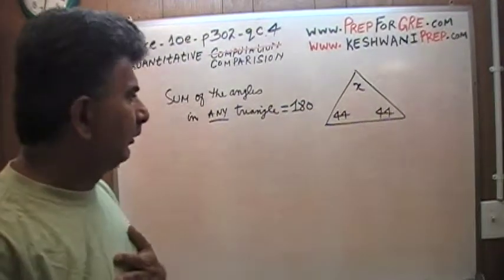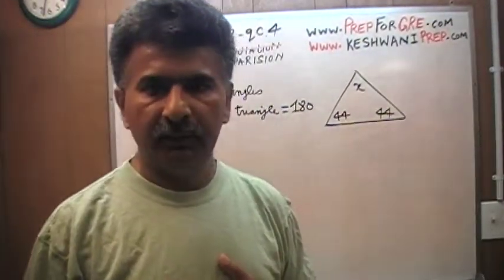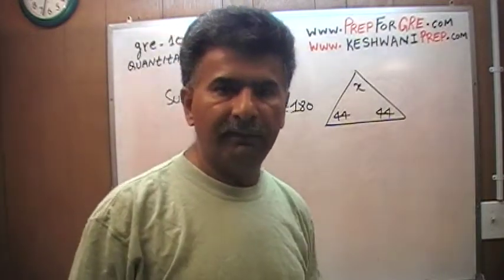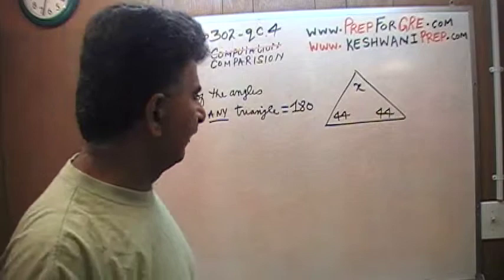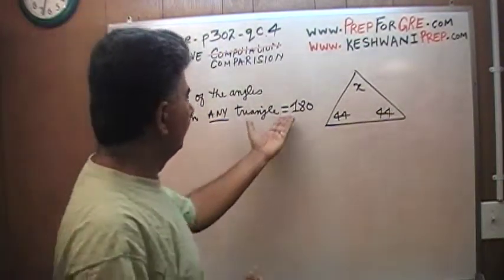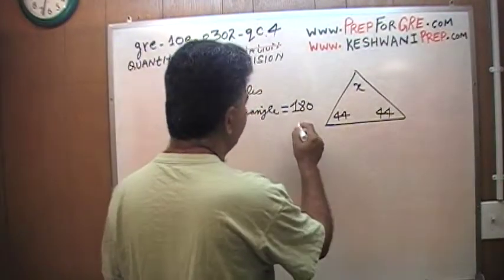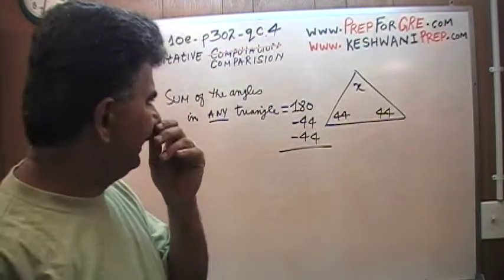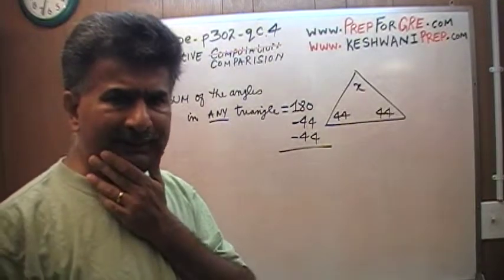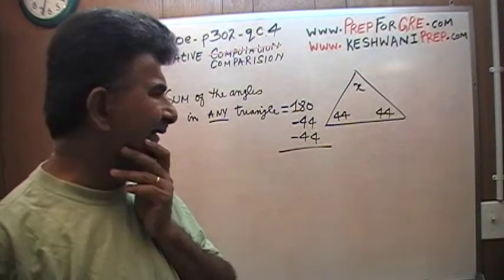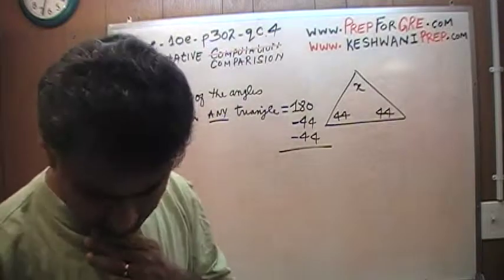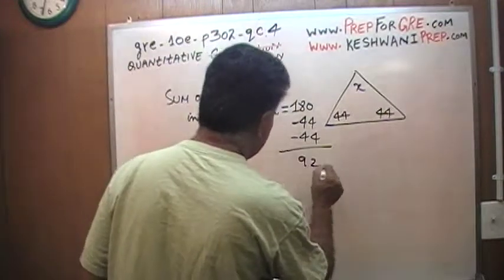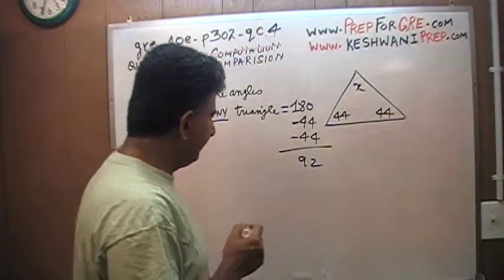In any triangle, it doesn't matter what shape the triangle is — as long as it has three sides, it will have angles that add up to 180. That's just the convention. If the total is 180, and one angle is 44 and another is 44, you subtract: 44 plus 44 is 88, and 180 minus 88 should be 92.